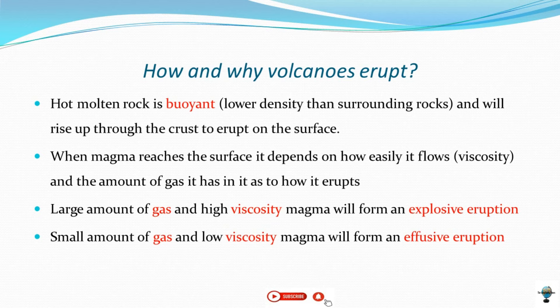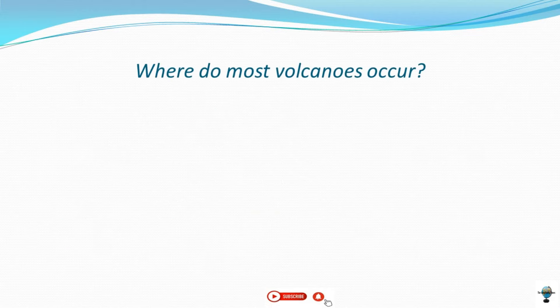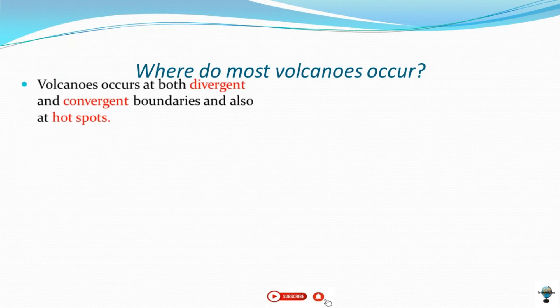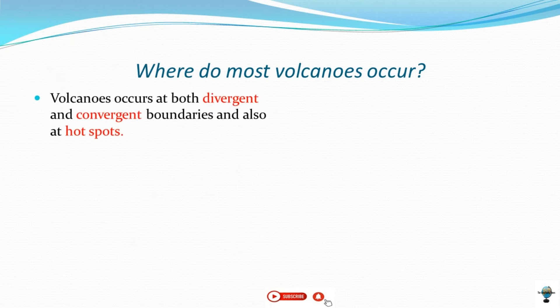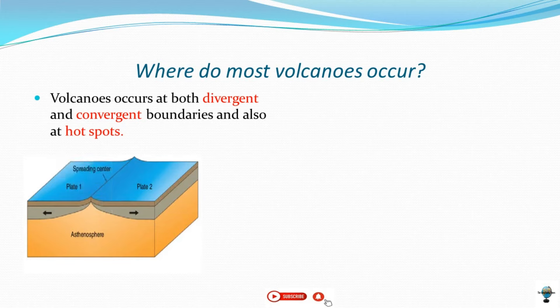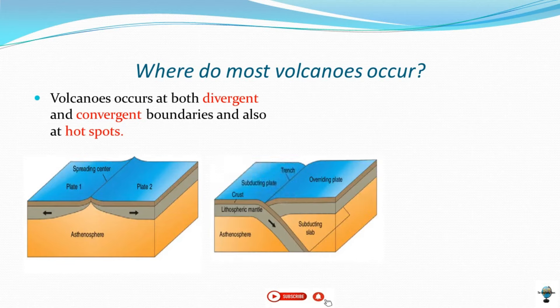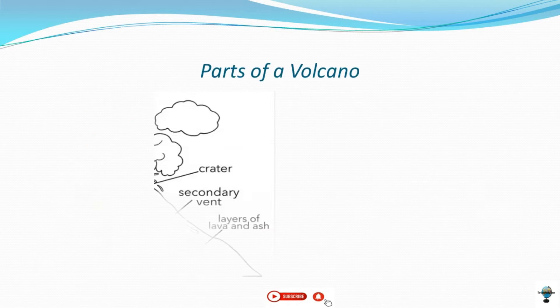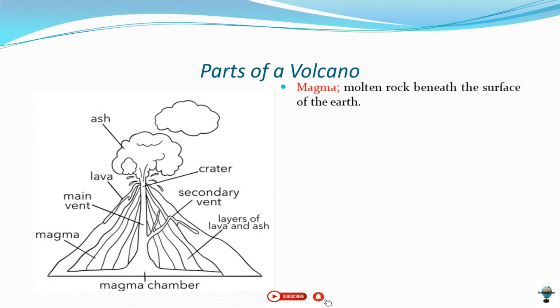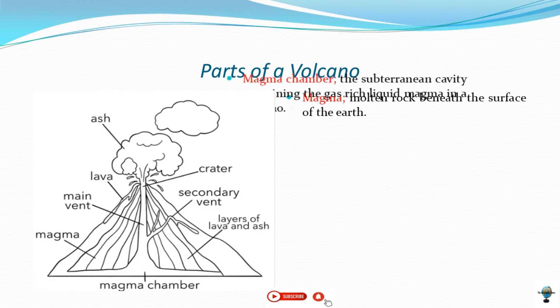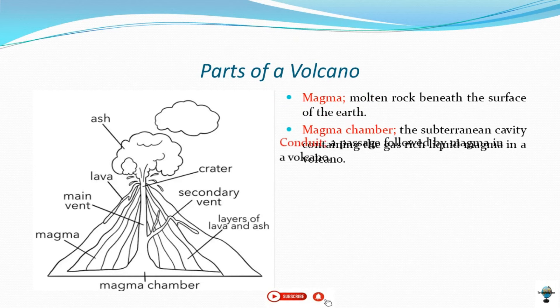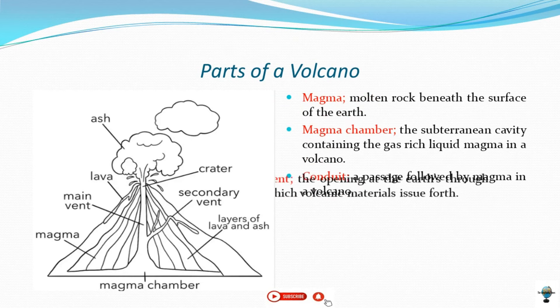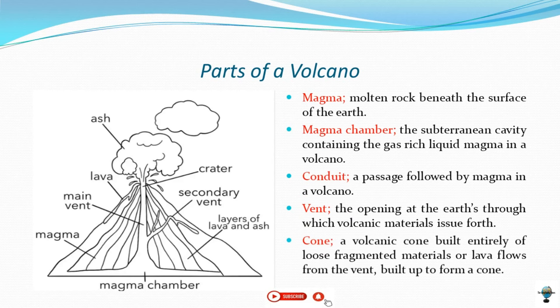Most volcanoes occur at divergent and convergent plate boundaries, as well as in hot spot areas. The important parts of volcanoes include, but are not limited to, the magma chamber, conduits, vents, and cone.